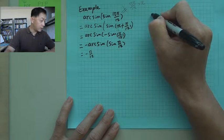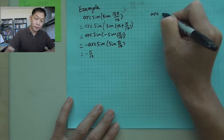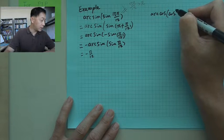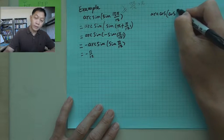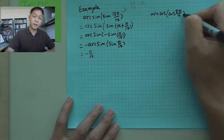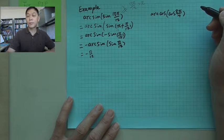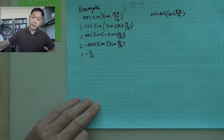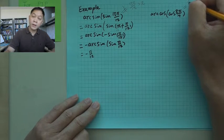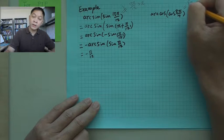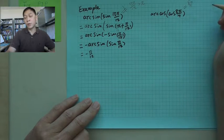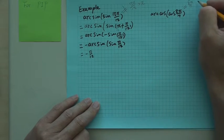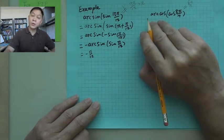Another one is arccosine cosine 8 pi over 7. And here, again, you cannot say that's 8 pi over 7, and this one will be wrong.